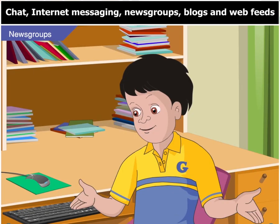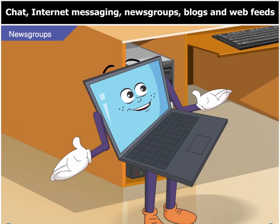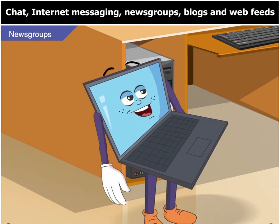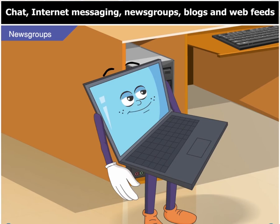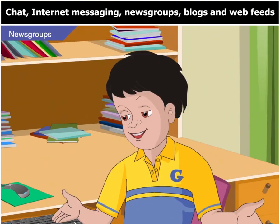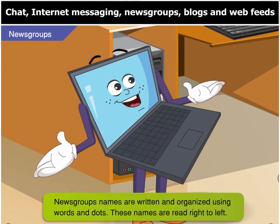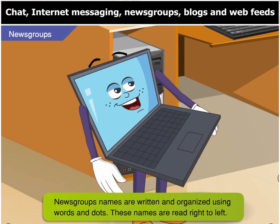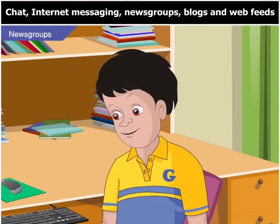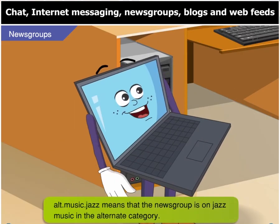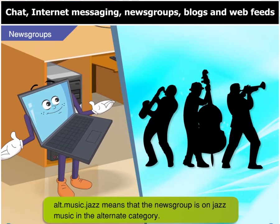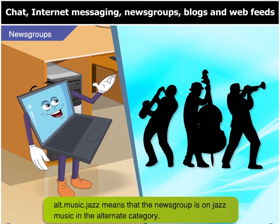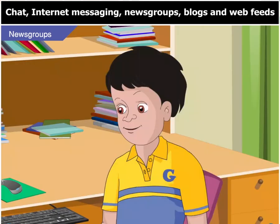Do you know the name of any of these news groups? Yes, there are many news groups on the internet. These news groups have special naming schemes that indicate their area of interest. The names are written using words and dots, and these names are read right to left. For example, there is a news group called alt.music.jazz. It means that this news group is on jazz music in the alternate category.